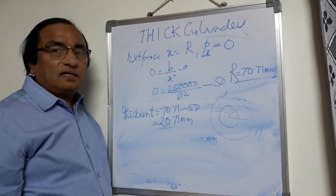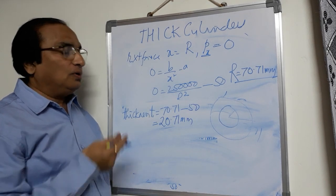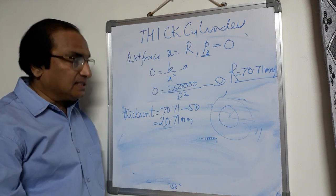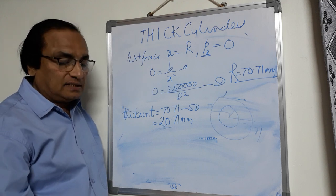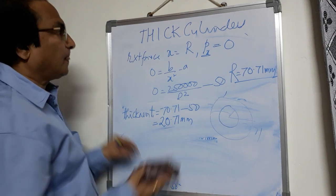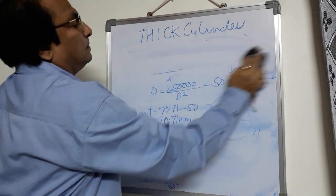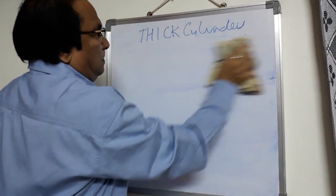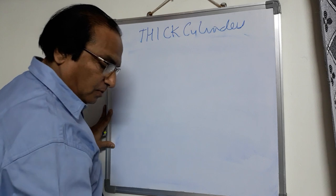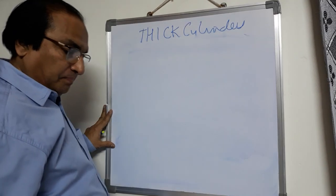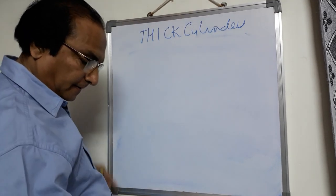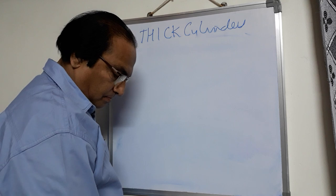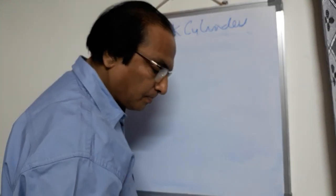So this is another category of problem: two stresses are given and you have to find out the thickness or draw the hoop stress diagram. This is the second category of problem on thick cylinders. Let us see one more problem on thick cylinders.